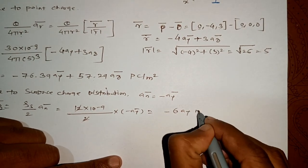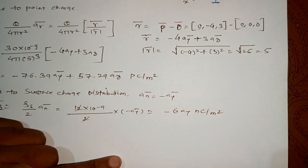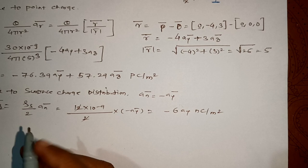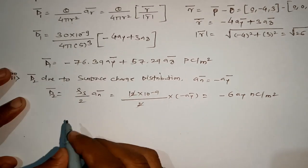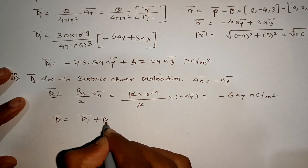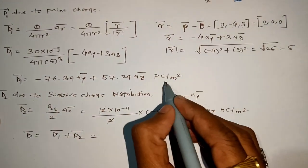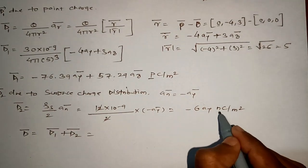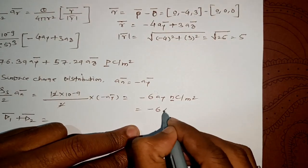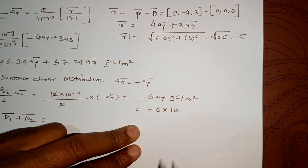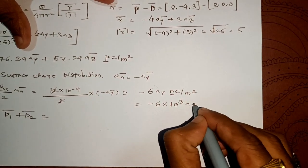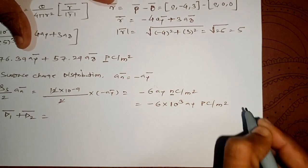So D2 = -6 ay nanocoulombs per meter square. Converting to picocoulombs: -6 nC/m² = -6 × 10³ pC/m², so D2 = -6000 ay picocoulombs per meter square.